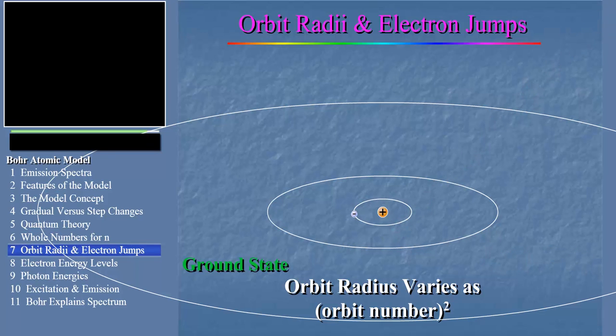Not just any photon, but one of exactly the same energy as the difference in energy between the two orbits. Thus, atoms only emit light of certain frequencies or energies and not others.